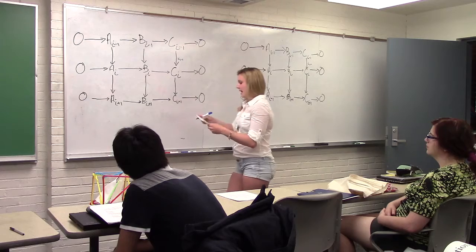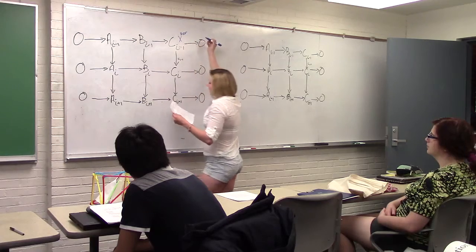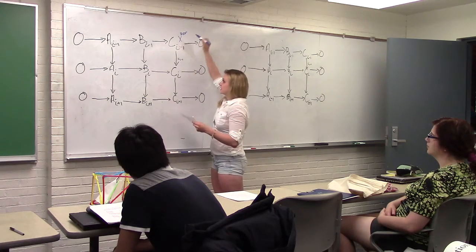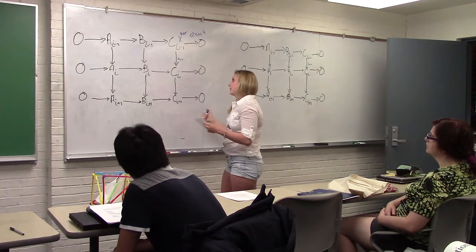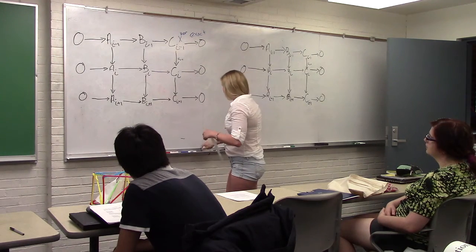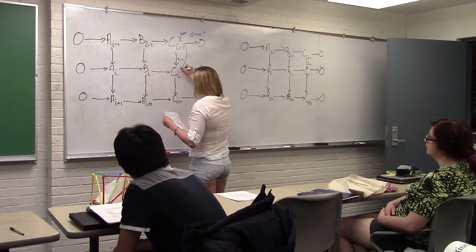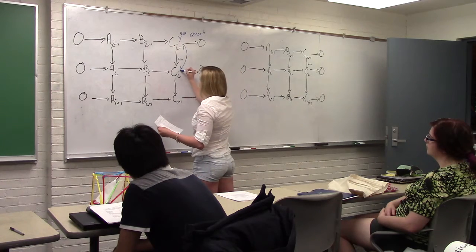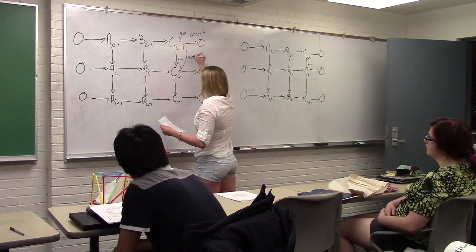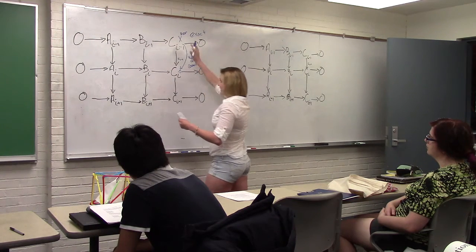We're going to start with x right here and this is going to be in the kernel. We know this because the sequence is all exact and it's going to zero. So that's why we know it's in the kernel. Then what we're going to do is bring this down here because it's exact and it's in the kernel, so we can drop it down. It's going to go to zero here — it's in the kernel and exact.